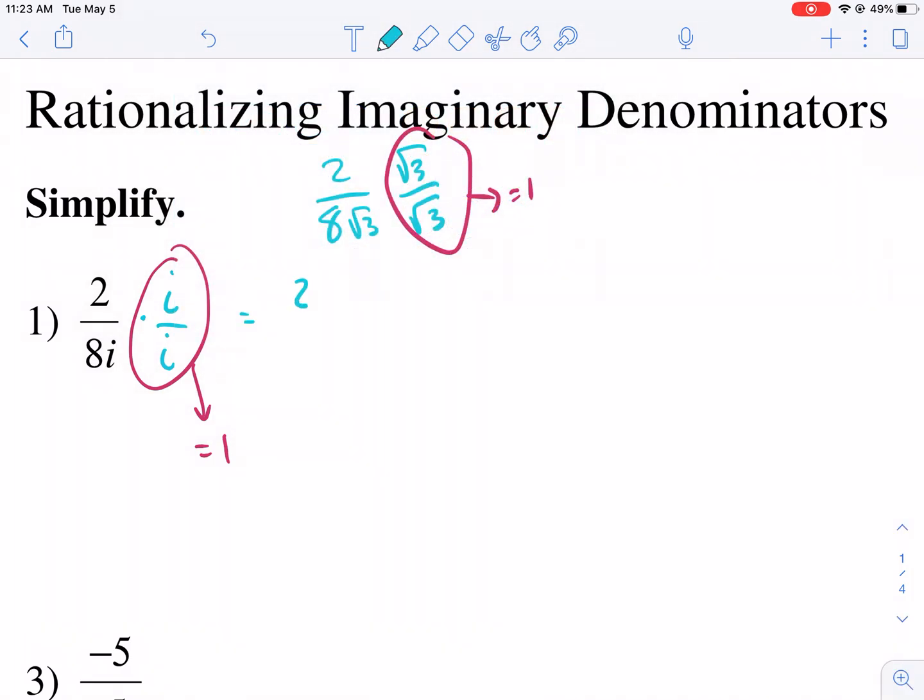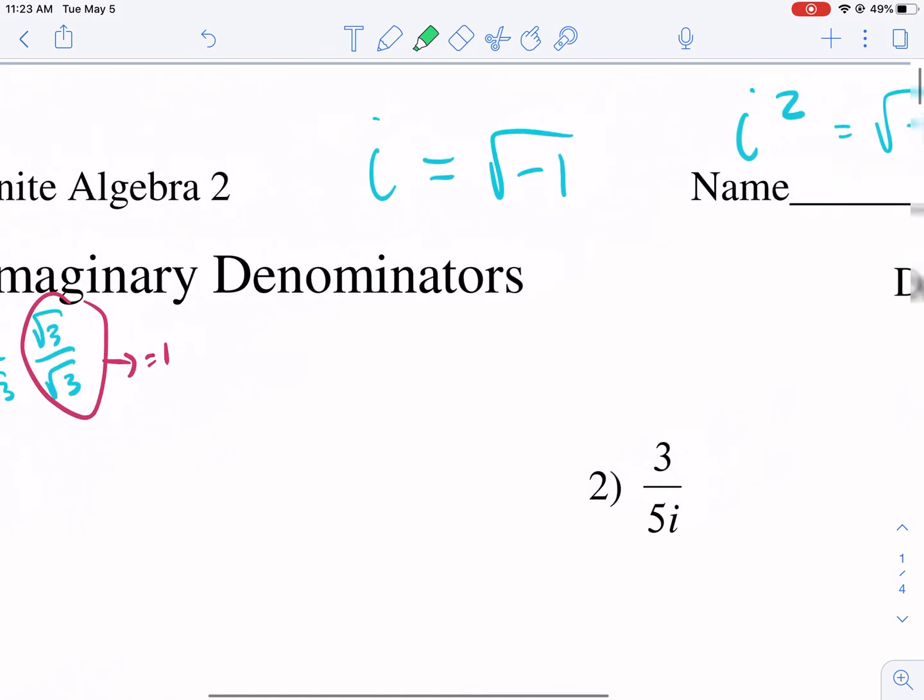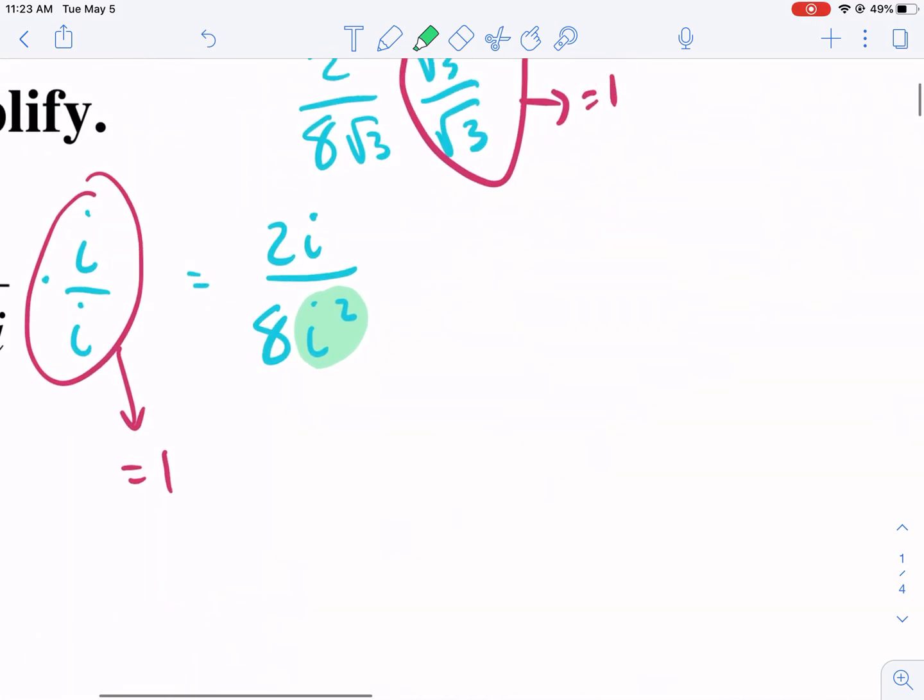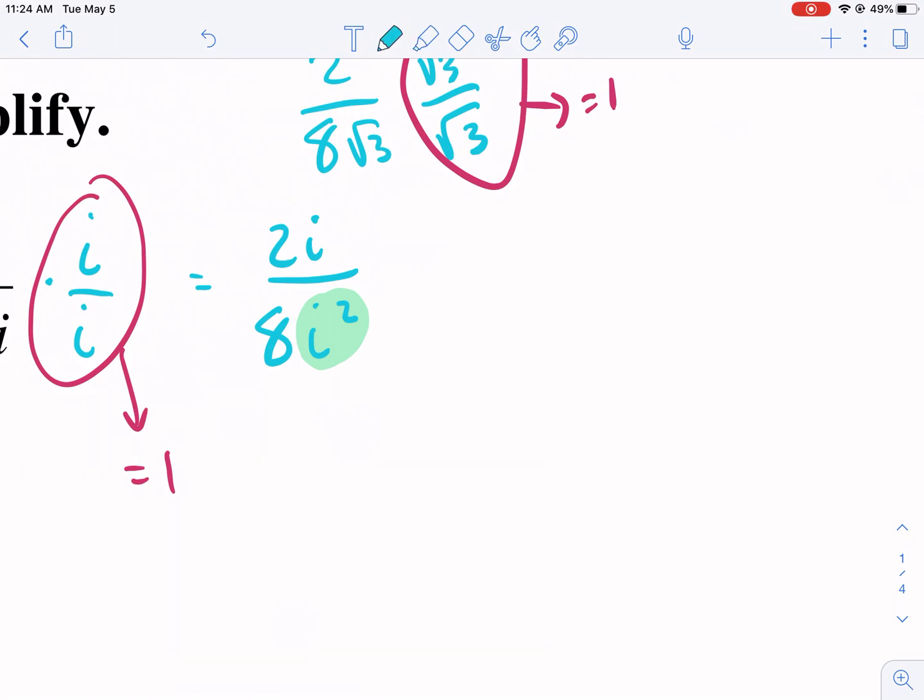So we have the top times i, 2i, and this is where it gets interesting. We have 8i times i is 8i squared. Anytime you have an i squared, you need to think about changing it, because we know that i squared is equal to negative 1. So what we need to do here is we need to change this problem to 2i equals 8 times negative 1. So we have 2i over negative 8.